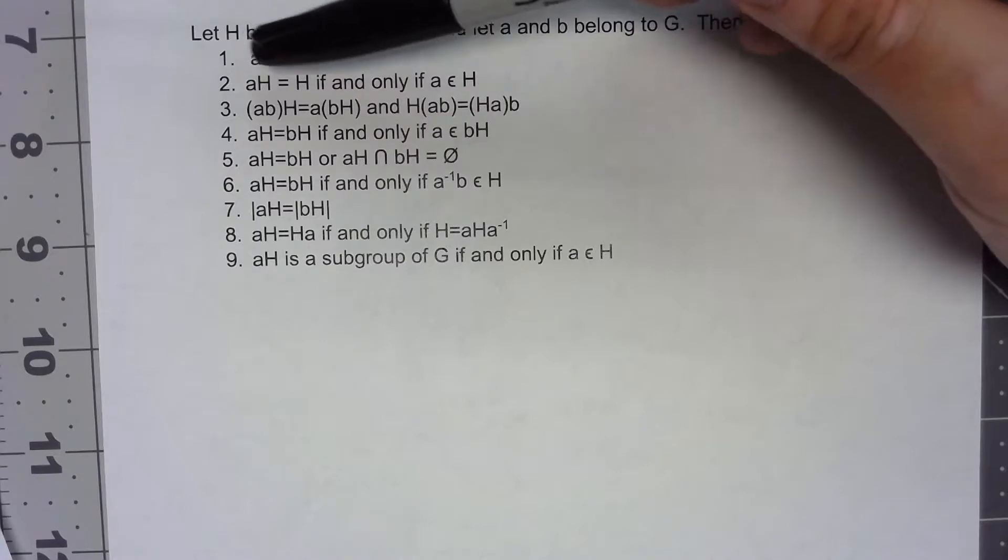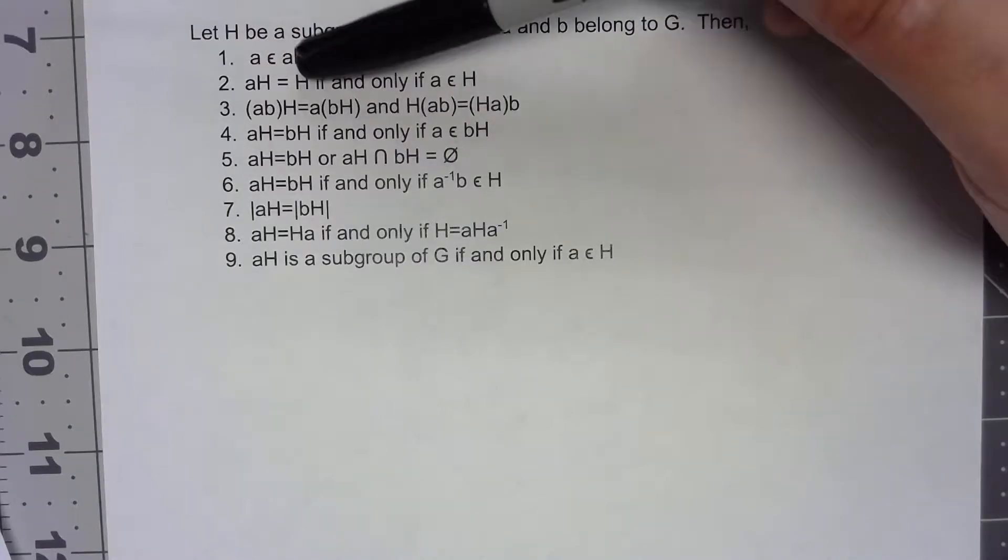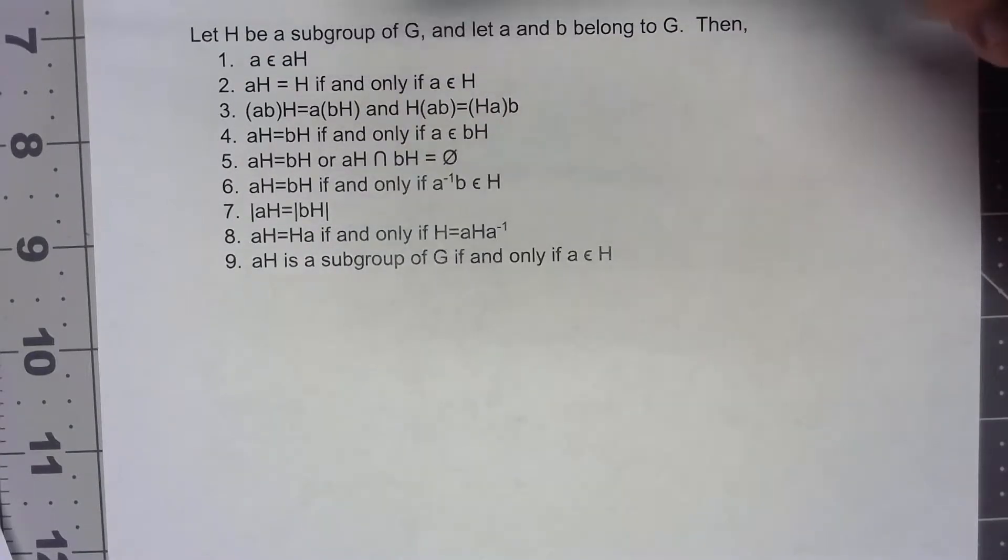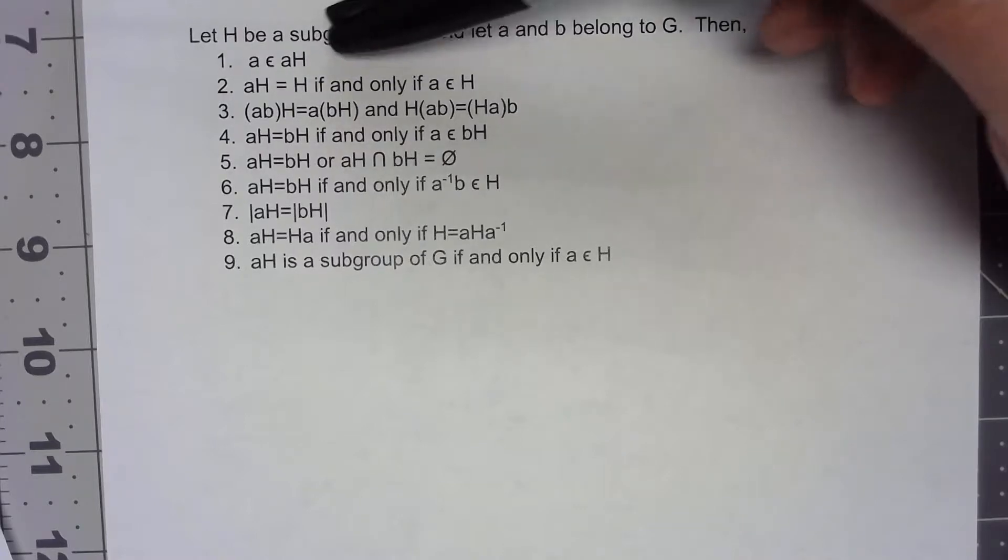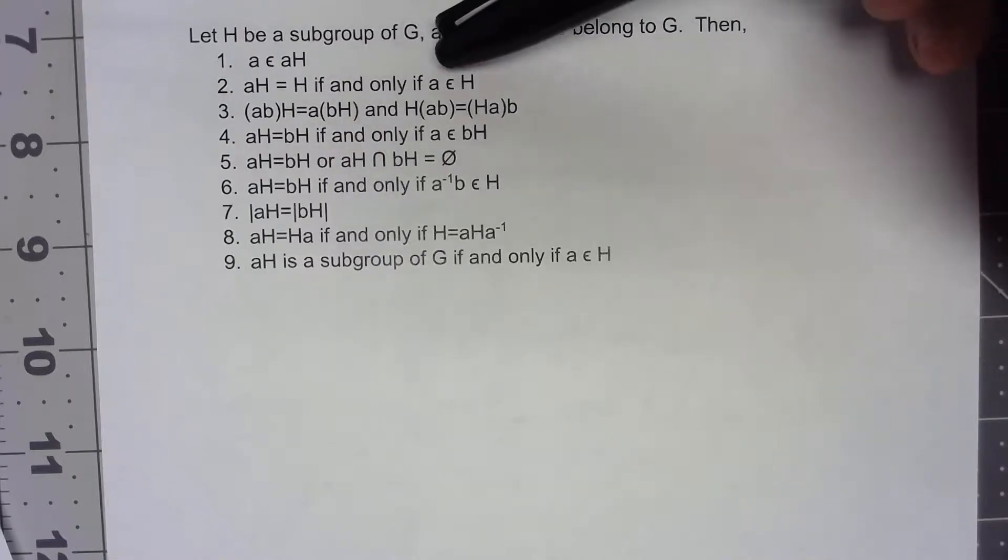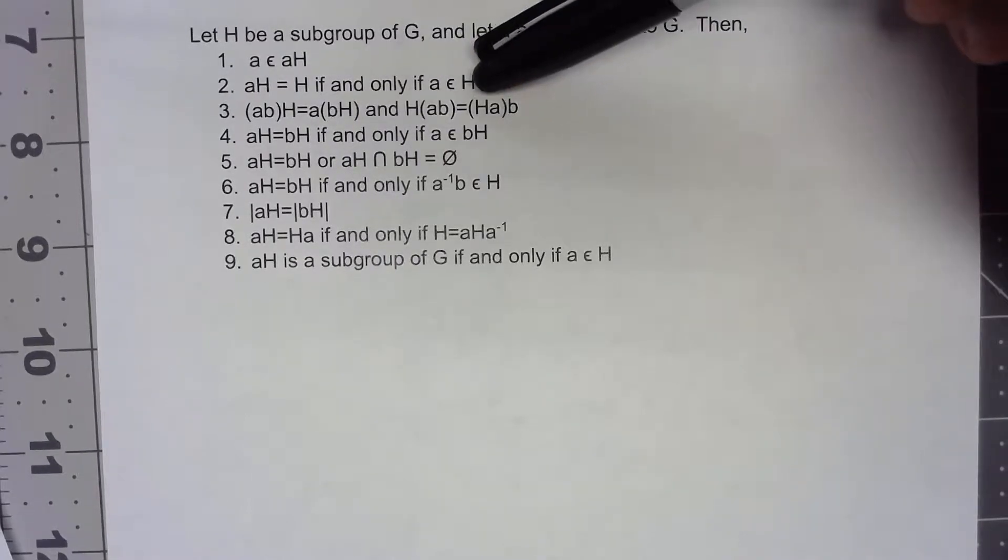If you've got a coset and that comes out to be the subgroup itself, that can only ever happen when that element was in the subgroup.